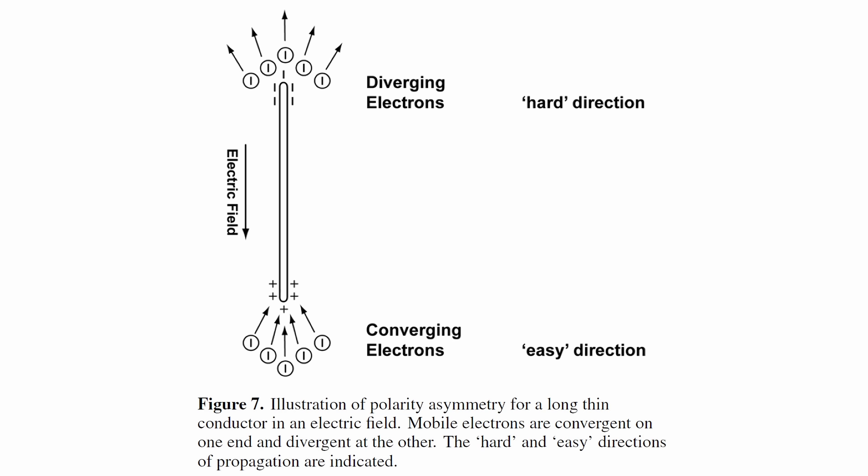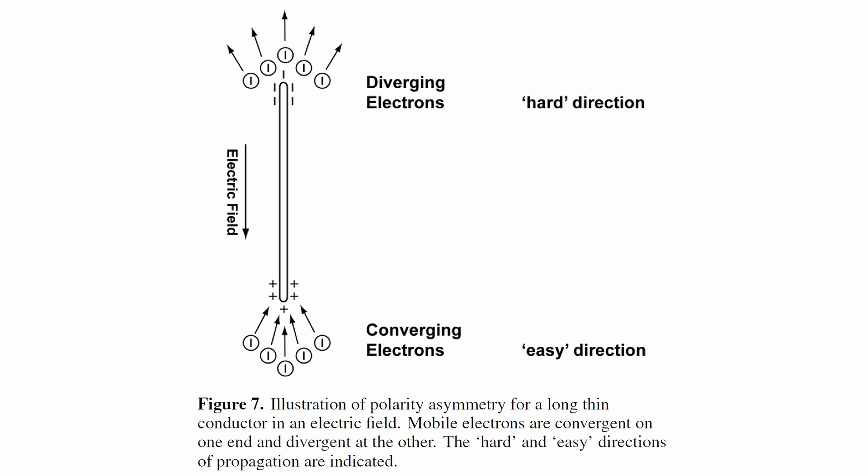Part of this disparity may stem from the contrasting mobility between free electrons and positive ions. Examining a conductive filament in an ambient electric field reveals that at the positive end mobile electrons converge towards the higher field, encouraging continued extension. Conversely, at the other end mobile electrons diverge into a weaker electric field, making it a less favorable zone. Consequently, the positive end dominates the overall structure, creating a favorable environment for extension.